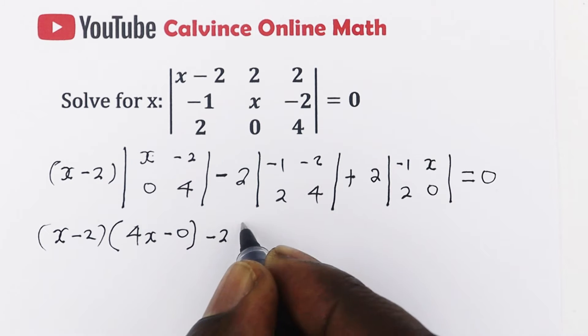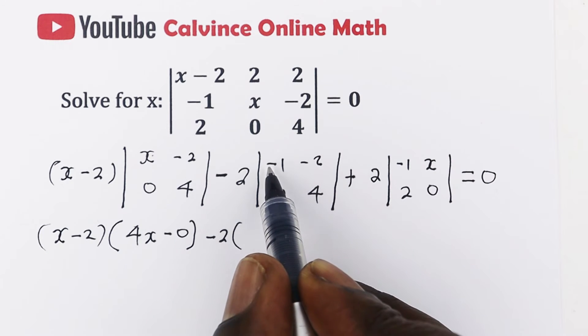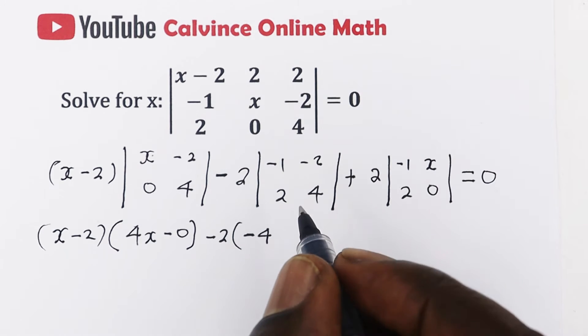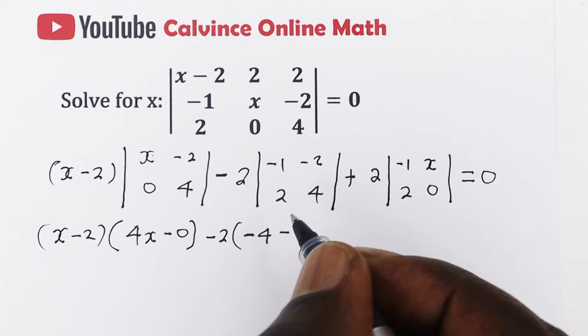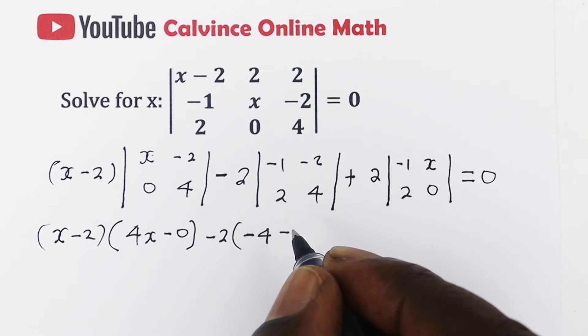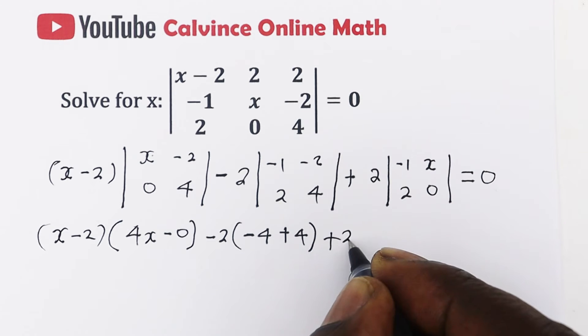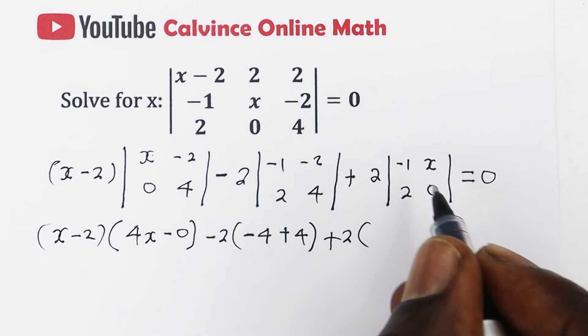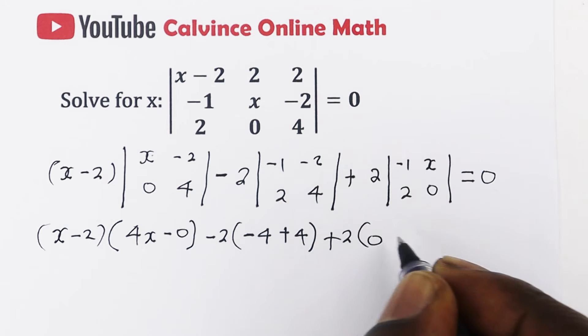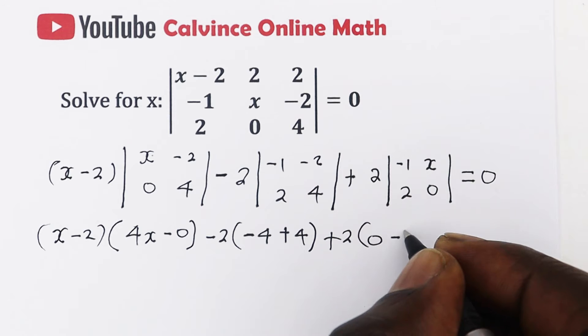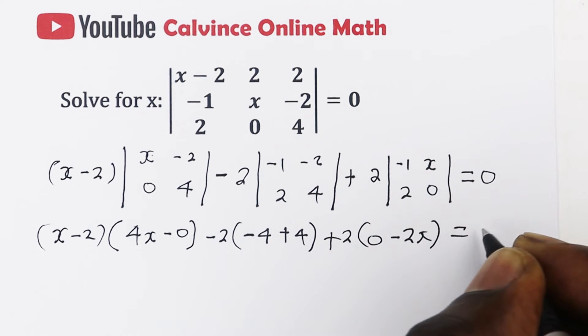Then we have minus. Here we have minus 1 times 4, which is minus 4, minus negative 2 times 2, which is negative 4. So that is plus 4. And then here we have 2 into minus 1 times 0, which is just 0, then minus x times 2, that is 2x, and that's equal to 0.